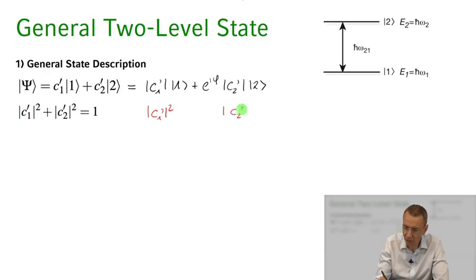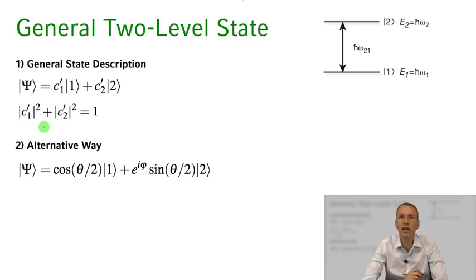And those of course have to sum up to 1 due to the conservation of probability that we have in the system. Now if we look at this constraint of norm C1' squared and norm C2' squared equal to 1, this suggests that we can actually write this state in an alternative way.